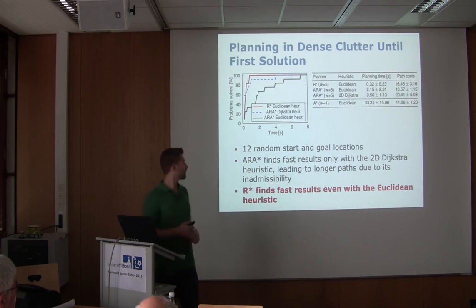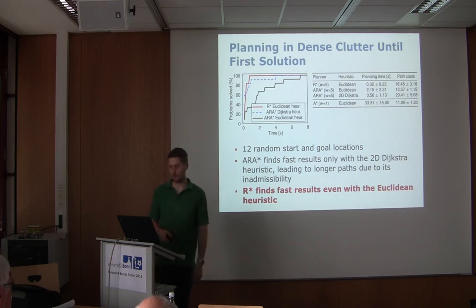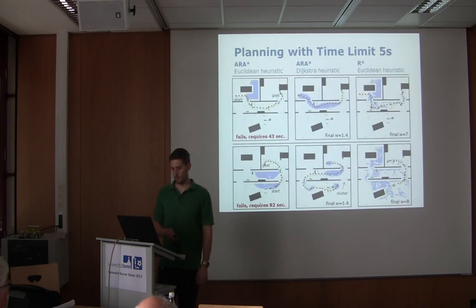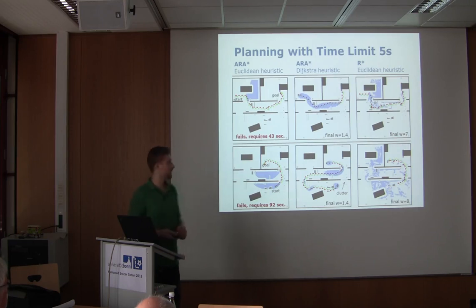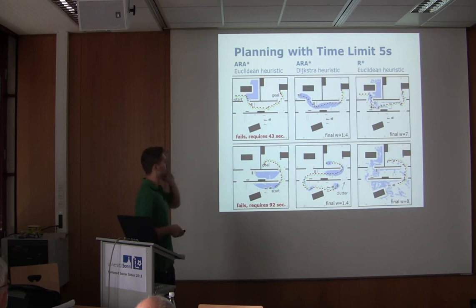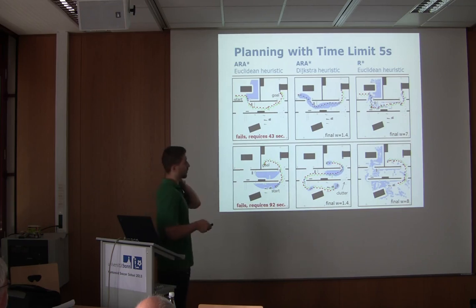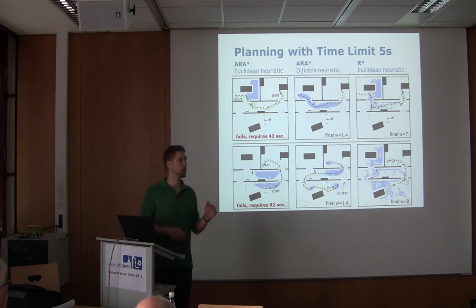The take-home message: R* finds fast results even with the Euclidean heuristic in densely cluttered environments with many local minima. In aggregated results with random start and goal locations roughly 3.5 meters apart, ARA* with the Dijkstra heuristic finds fast results; ARA* with Euclidean takes much more time; whereas R* is largely independent of the heuristic choice. Path costs for the first R* result at W=5 are maybe 30-40% worse than optimal, but optimal planning can take a minute or more.